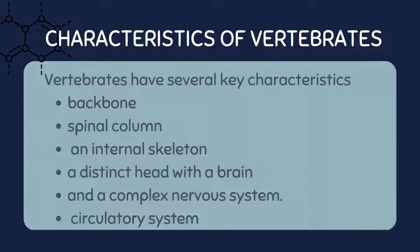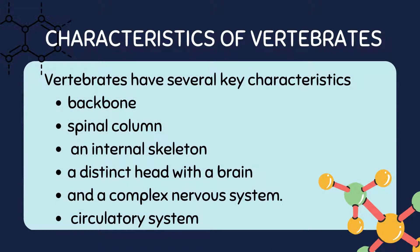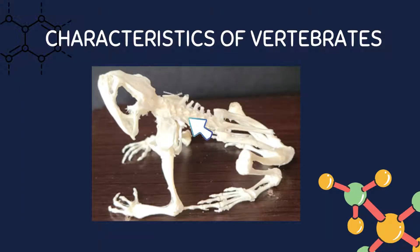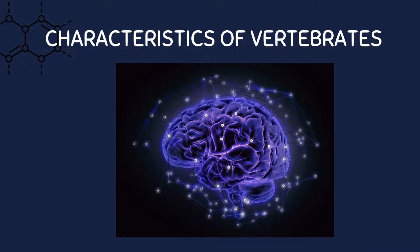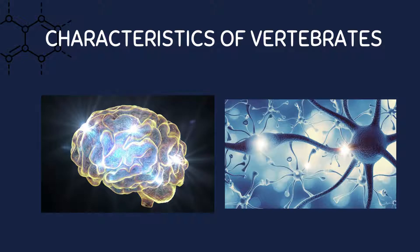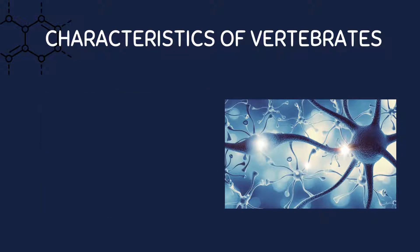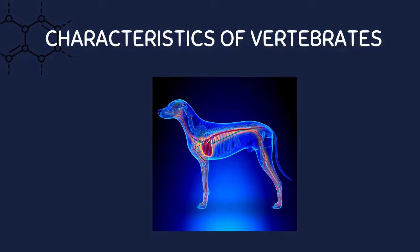Vertebrates have several key characteristics that set them apart from invertebrates. These include a backbone or spinal column, an internal skeleton, a distinct head with a brain, and a complex nervous system. Vertebrates also have a closed circulatory system and are typically larger and more complex than invertebrates.